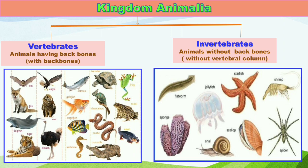You can take the example of bat, fox, dolphin, tiger, eagle — all of them have a backbone or vertebral column in their body, so they are classified under vertebrates.